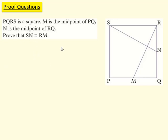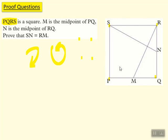Let's look at a question. It says PQRS is a square. Whenever they refer to a shape and give the letters of the corners, those letters go either clockwise or anti-clockwise around the shape — they never crisscross. So PQRS goes anti-clockwise around the shape. M is the midpoint of PQ, meaning it's in the middle of PQ, and N is the midpoint of RQ.